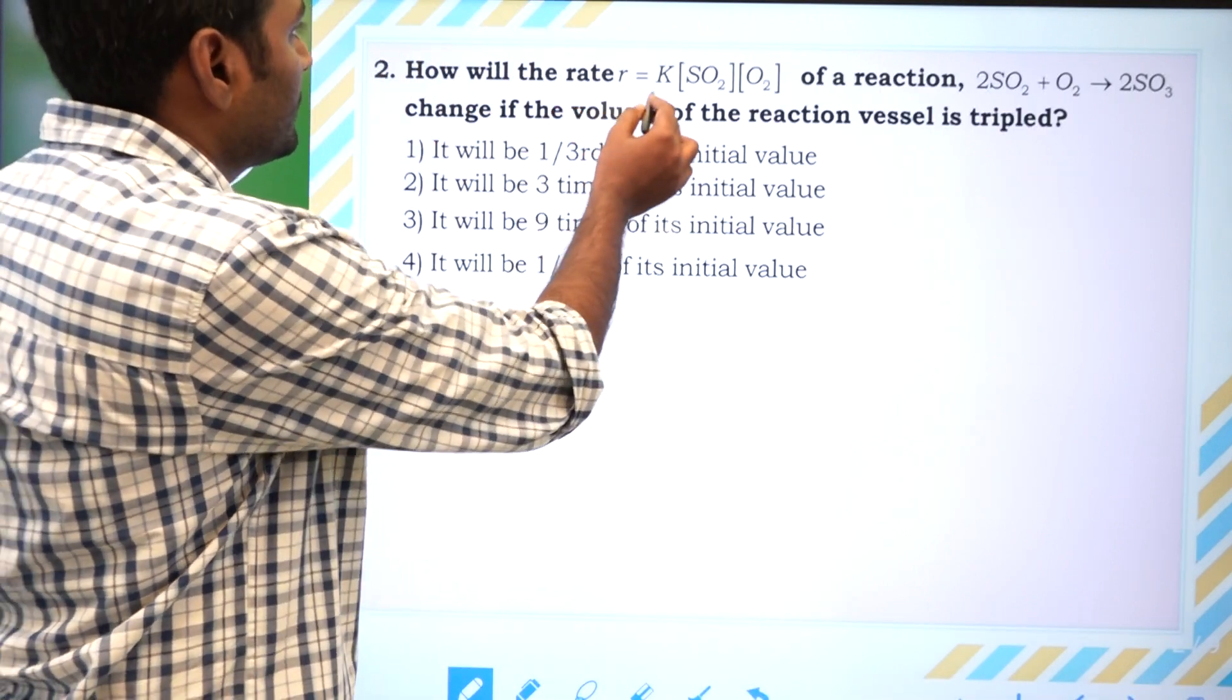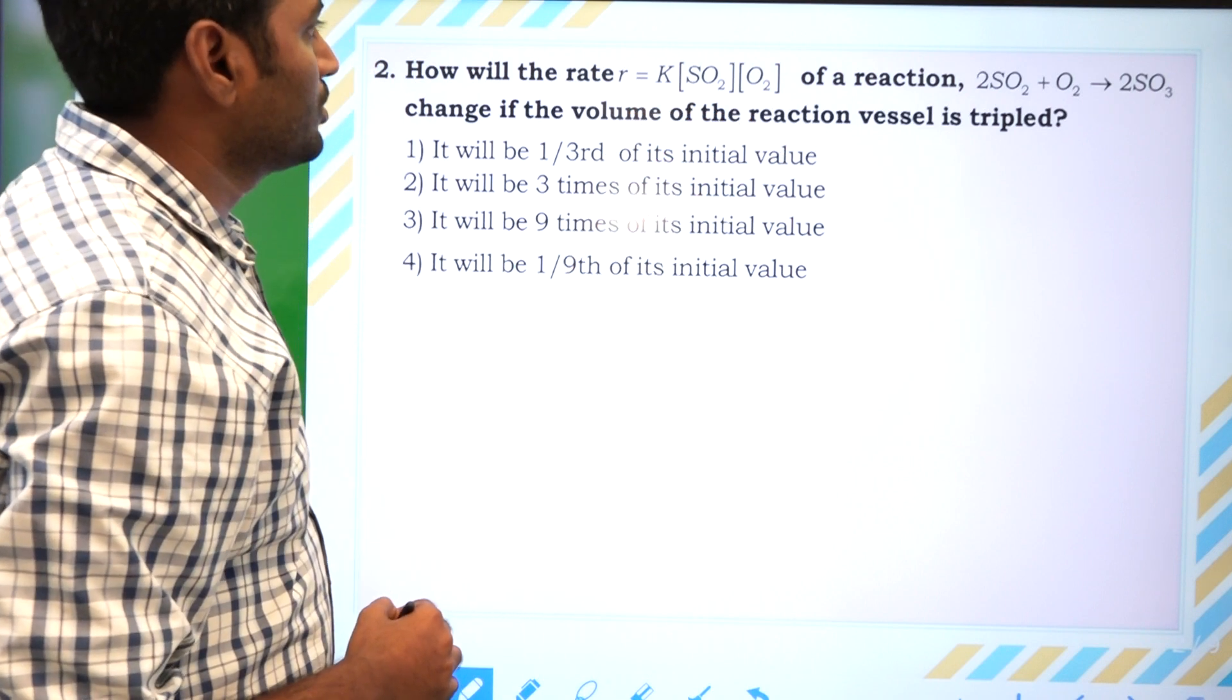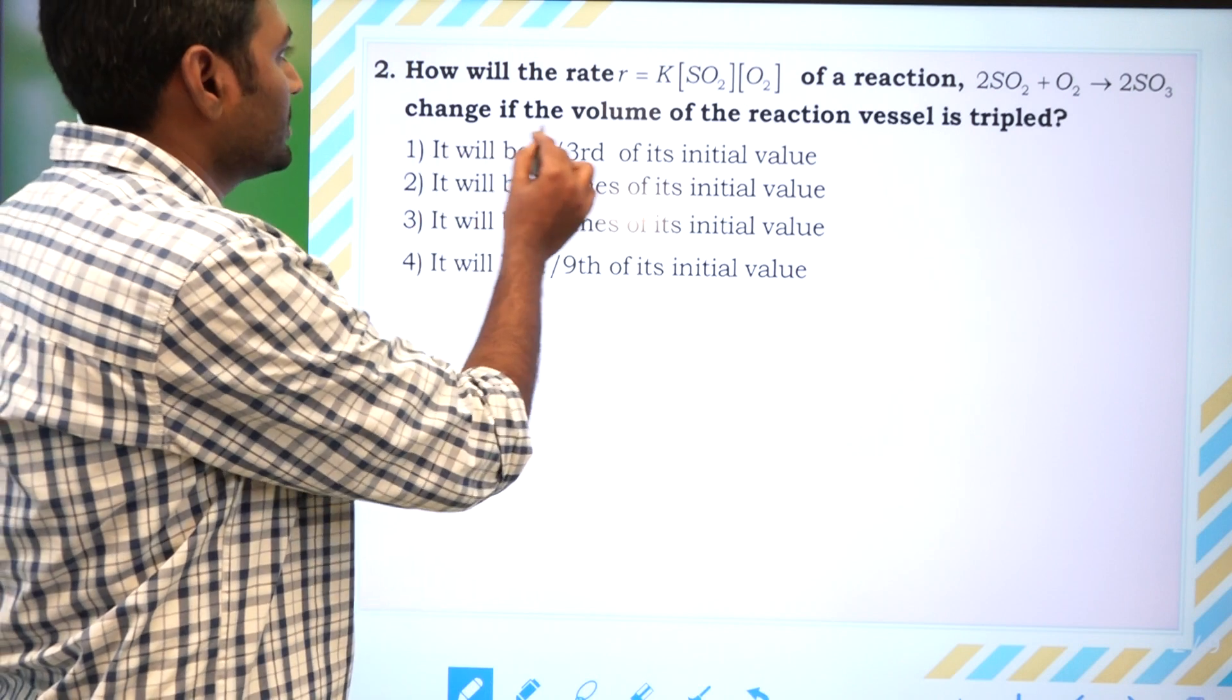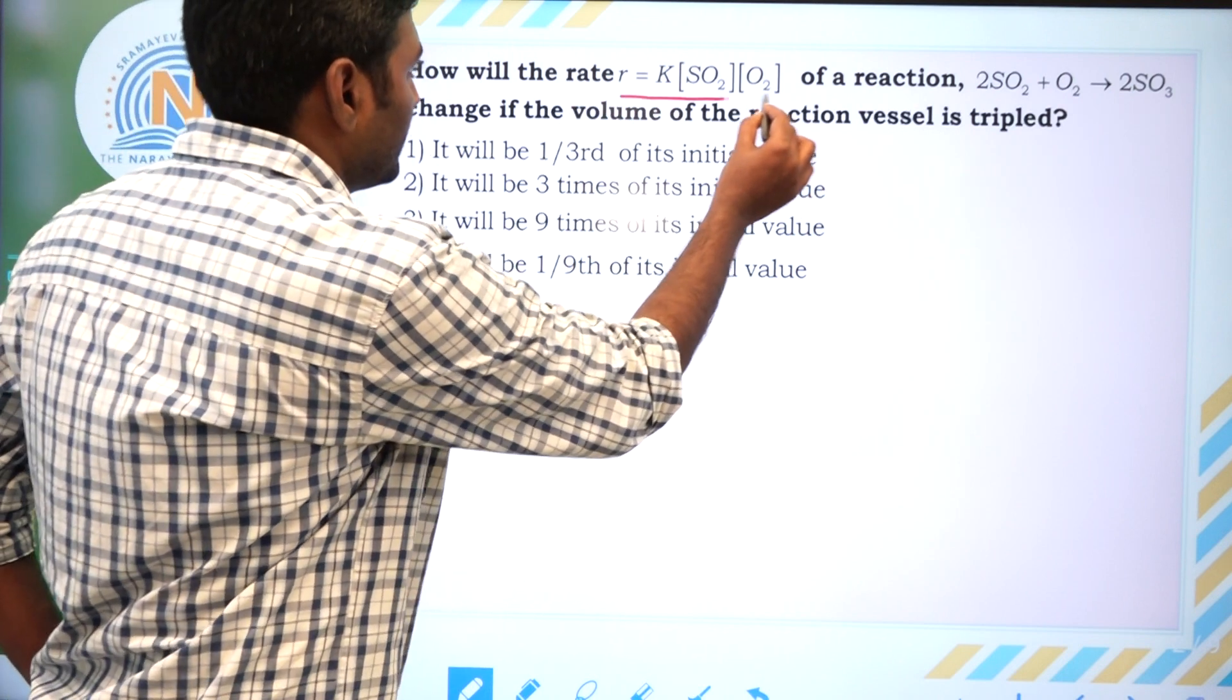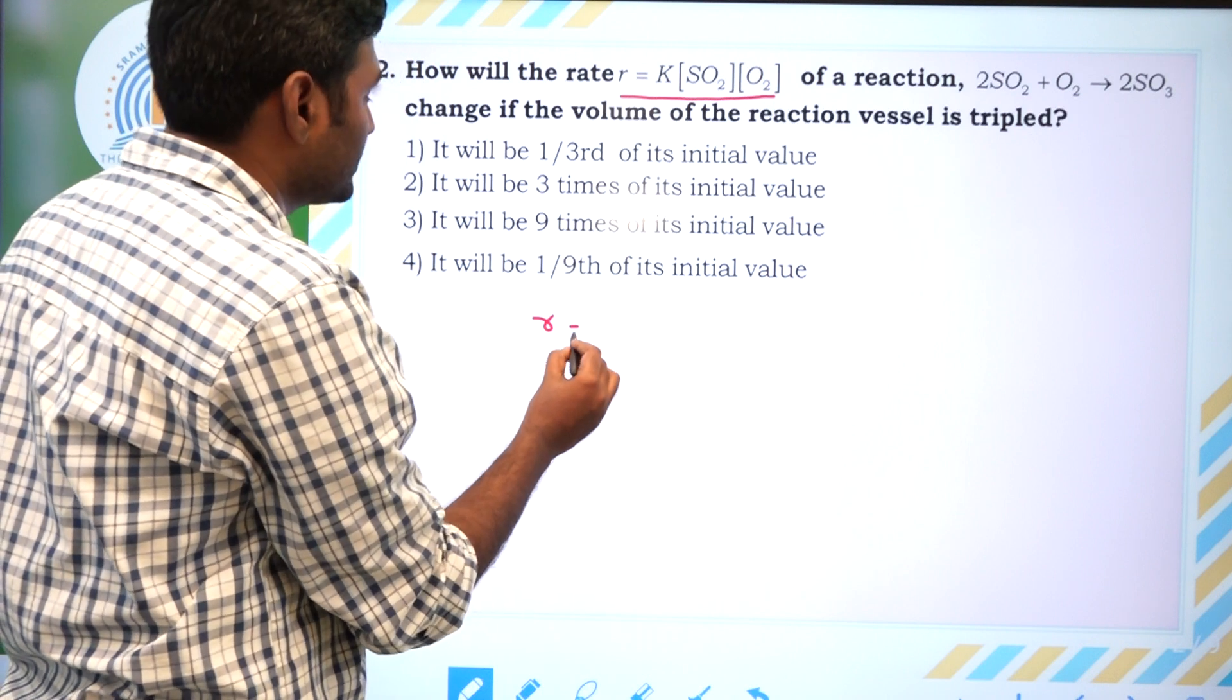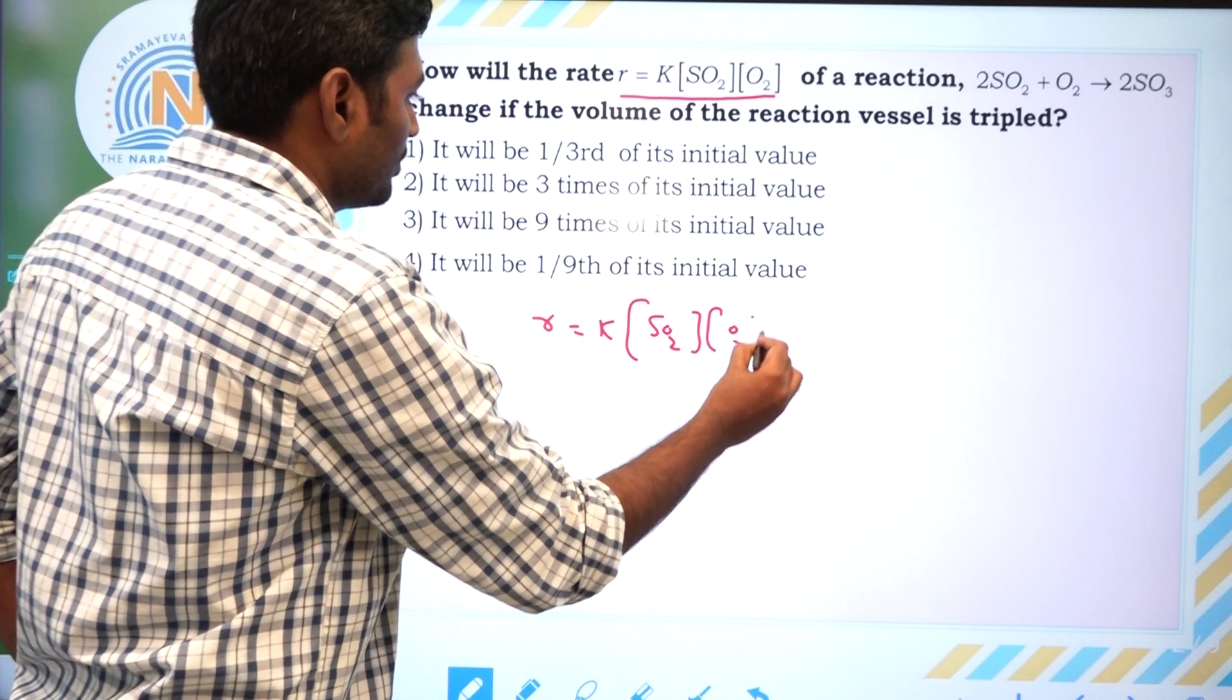How will the rate change for the reaction 2SO2 plus O2 gives 2SO3? If the volume of the reaction vessel is tripled, suppose the rate of the reaction is R equals K[SO2]²[O2].